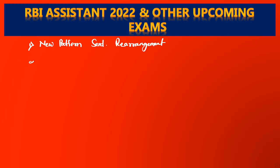The second is word replacement. By reading the sentence you can easily figure out which word is in the wrong place or which two words can be replaced. So you can easily get five out of five from this topic.